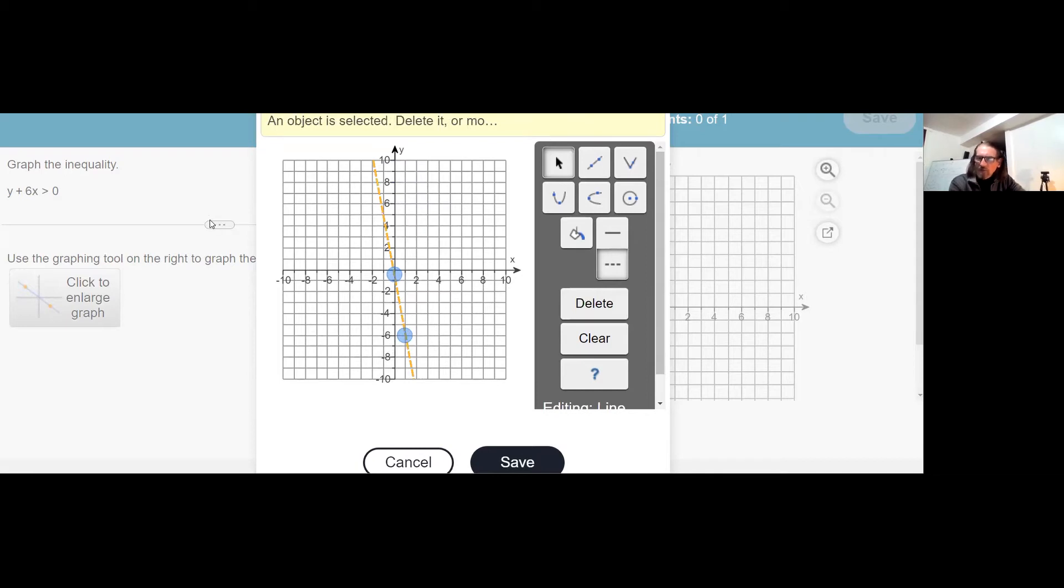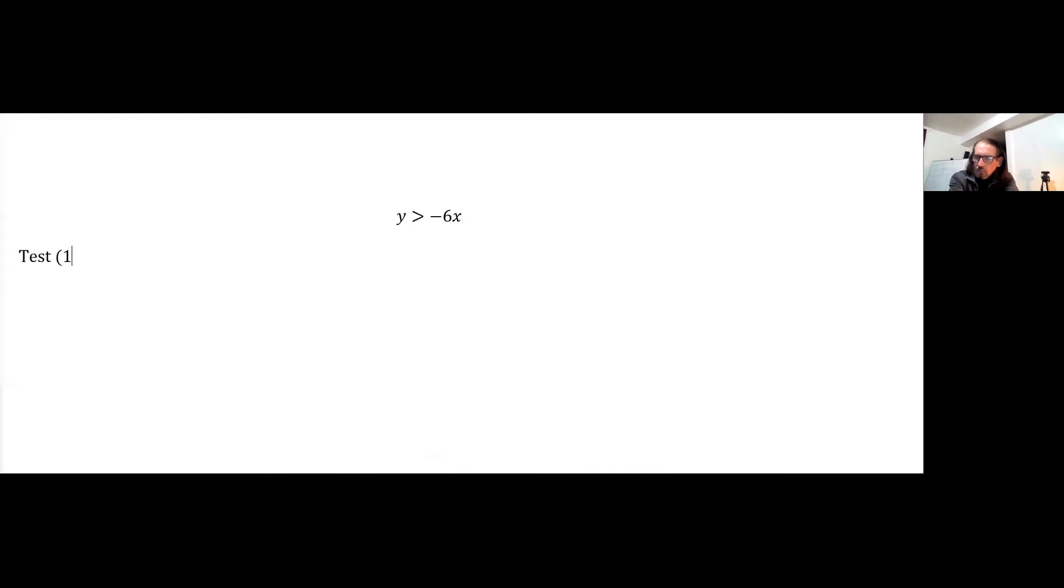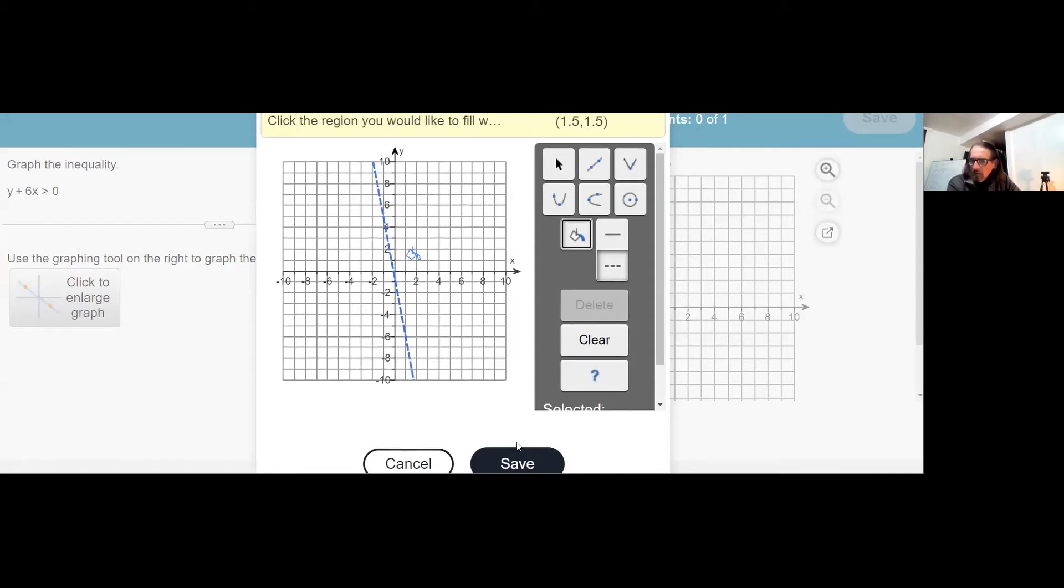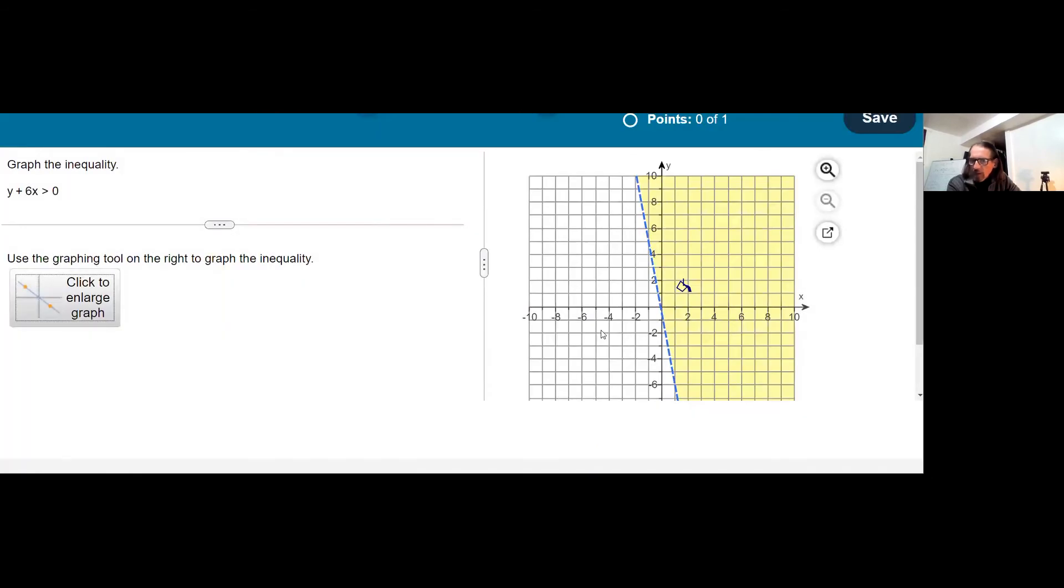Since the origin is on that boundary line, then I have to pick something else for a test point. I could test something such as 1 comma 1. And that means we're asking the question, is 1 greater than negative 6 times 1? And that would give us that 1 is greater than negative 6, which is true. So, we shade the side that has 1 comma 1 on it. Select the bucket. Click on this side. Save. And check.